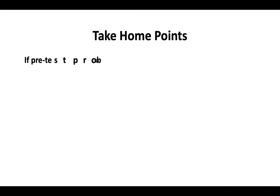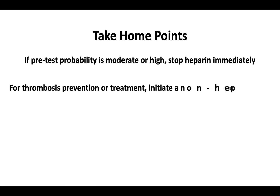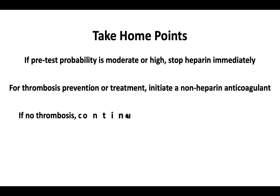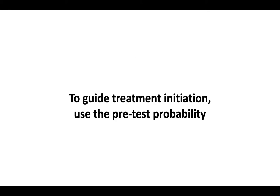Let's begin with the following take-home points. If the pretest probability is moderate or high, stop heparin immediately. For thrombosis prevention or treatment, initiate a non-heparin anticoagulant. If there is no thrombotic complication, continue anticoagulant therapy until platelet recovery. To guide treatment initiation, use the pretest probability.